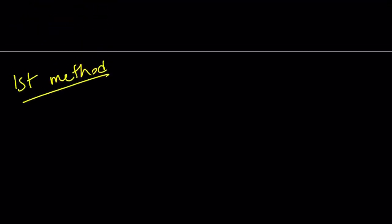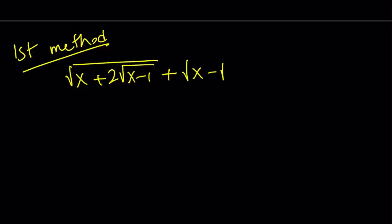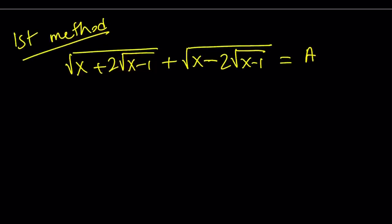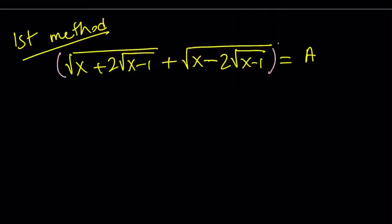Let's start with the first method. For my first method, I'm going to be setting this expression equal to a — you can use any variable. So these are conjugates, by the way. I'm going to set it equal to a, and then I'll square both sides. Now when you square both sides, you get rid of the radicals, at least some of them. Let's see what happens.